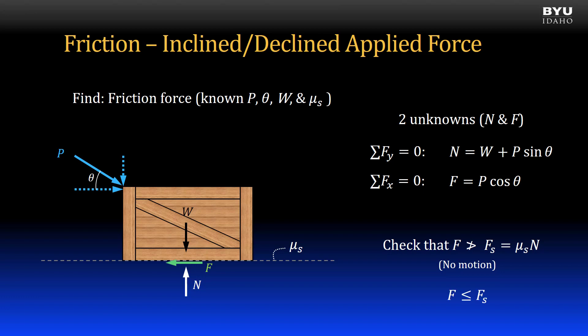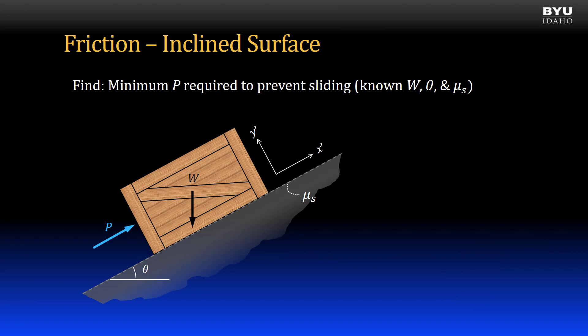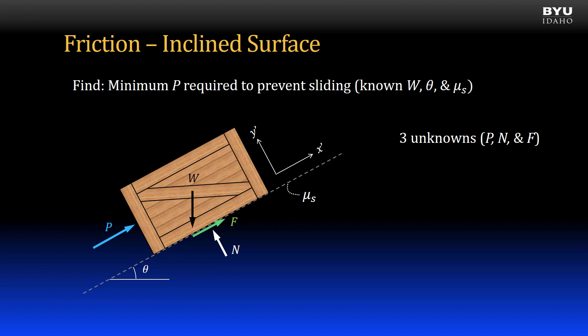If the friction force is less than or equal to the static friction force, then there is no motion. Another variation on this type of problem is for the object to be situated on an inclined plane. Suppose we want to find the minimum applied force P to prevent the crate from sliding down the incline. In this problem we have three unknowns: the applied force, the normal force, and the friction force. Because this is a particle equilibrium problem, we have two equilibrium equations — sum of forces in x and sum of forces in y. Our third equation will then be the static friction equation. It applies here because we are trying to find the minimum force to prevent sliding, or in other words, the force required to cause impending motion.